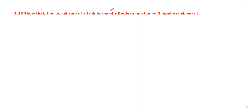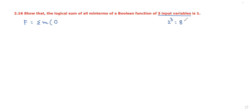Sum of all minterms - first identify all minterms. Let f equal to the boolean function, represented as all minterms. For 3 input variables, we have 2 power 3 which is equal to 8 minterms, ranging from 0 to 7.